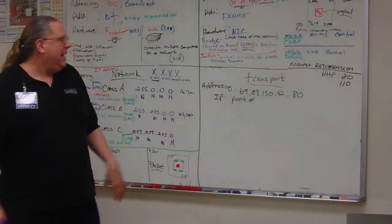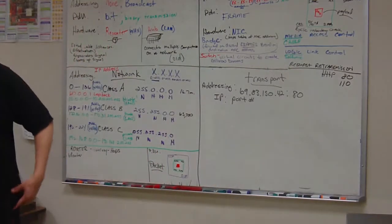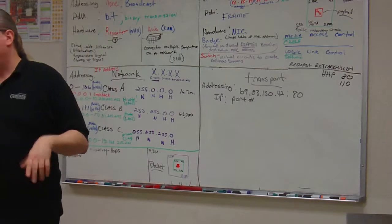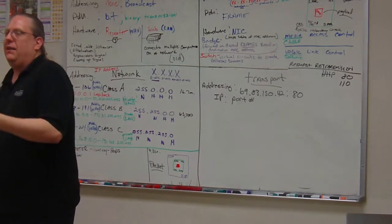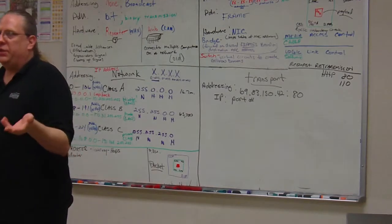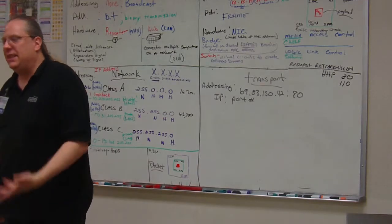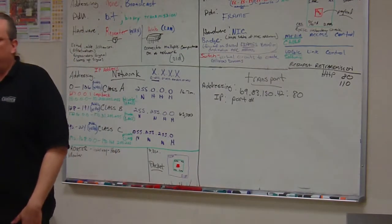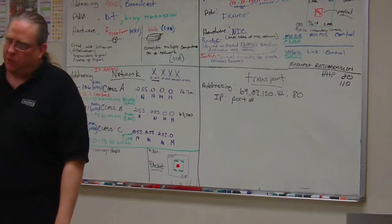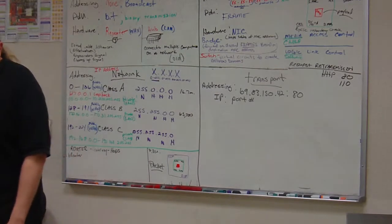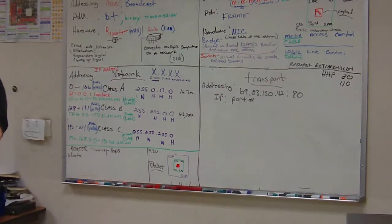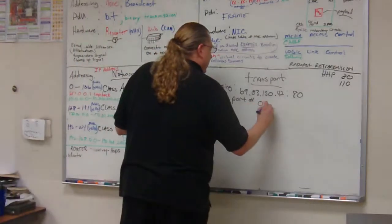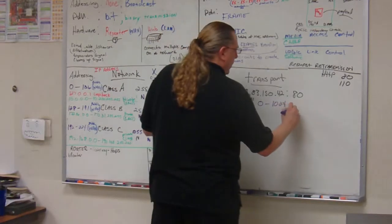Port numbers use bit rates — when you string bits together the number doubles each time: 0, 1, 2, 4, 8, 16, 32, 64, 128, 256, 512, 1,024, 2,048, 4,096, and so on, up to above 65,000. Ports 0 through 1,024 are well-known ports for the most frequently used services. Ports 1,025 through 49,151 are registered port numbers. Ports 49,152 through 65,535 are dynamic (or private) ports — used when you need a port number for a service that isn't commonly used.